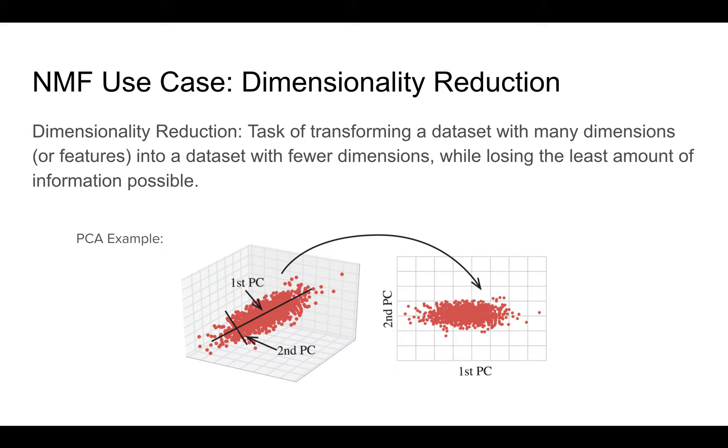In PCA, you have these things called principal components, right? What principal components do is they are essentially these orthogonal axes in a data set space that describe the axes of greatest variance in the data. And as you can see, on the left side of the figure there, that makes for essentially lowering the dimension of the data set if you use fewer axes than the axes in your original data set.